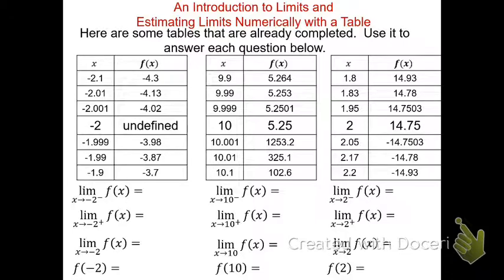In the first practice problem, the limit of f(x) as x approaches −2. From the left, f(x) goes from −4.3 to −4.13 to −4.02, approaching −4. From the right, it goes from −3.7 to −3.87 to −3.98, also approaching −4. Both sides approach the same unique number, so the limit exists and equals −4, even though f(−2) is undefined.